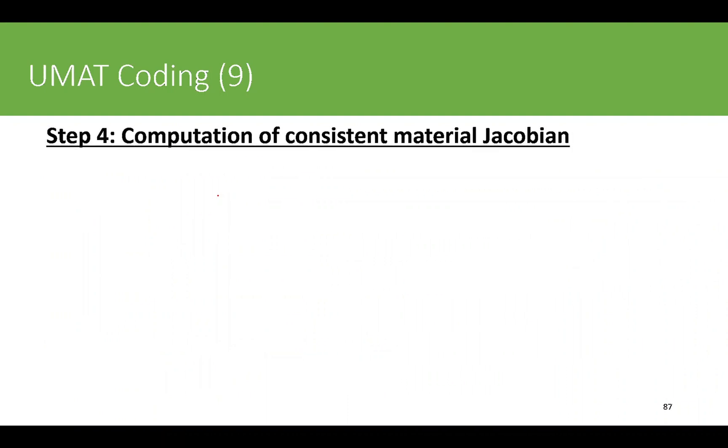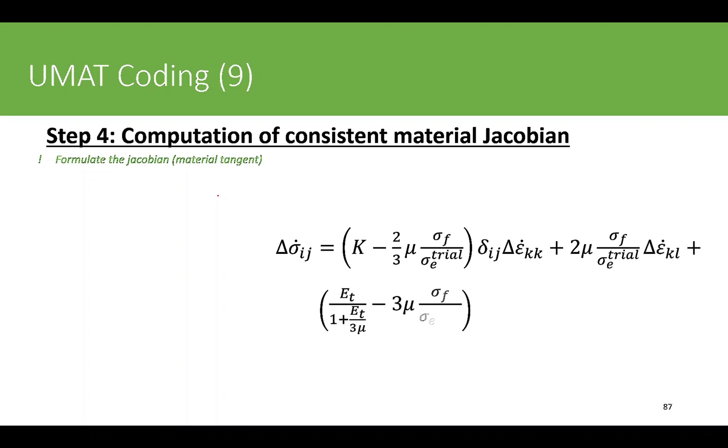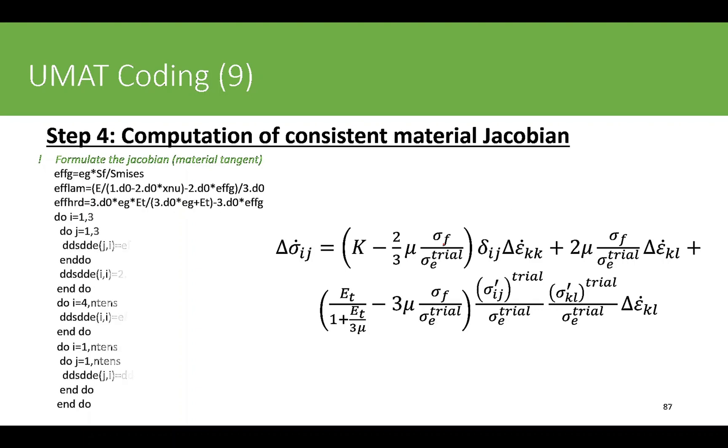Finally, we compute the consistent material Jacobian using the same relationship of partial derivatives. I'm going to use the same relationship which I used in the previous part; the only thing which is changed is sigma_f, which changes as the accumulated plastic strain increases. The rest of the formula remains the same. If you find it hard to understand this equation, you can use some numerical technique, and for that you can use Simo and Hughes algorithm, which is frequently used to find numerically the material Jacobian matrix.